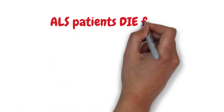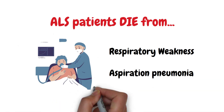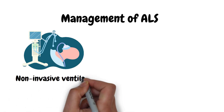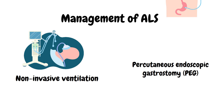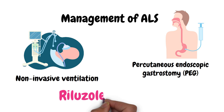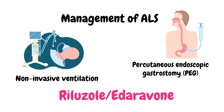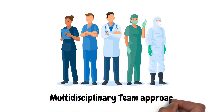Most ALS patients die from respiratory weakness and aspiration pneumonia. ALS can be managed with non-invasive ventilation for patients with breathing problems, percutaneous endoscopic gastrostomy for patients with feeding problems, and drugs such as Riluzole and Edaravone. It's also important to refer these patients to a multidisciplinary clinic to optimize healthcare delivery and improve survival and quality of life.